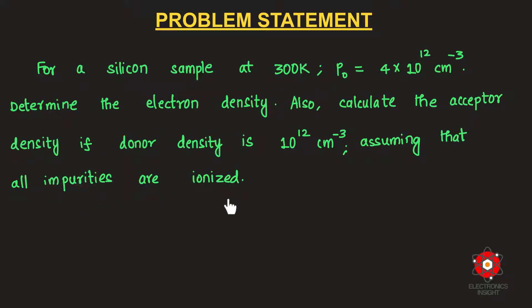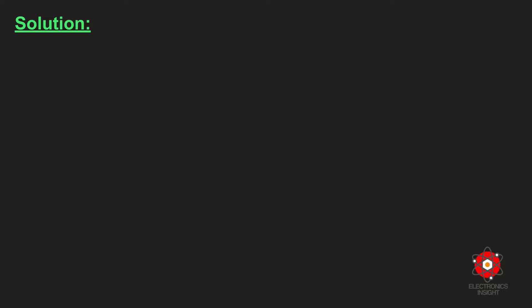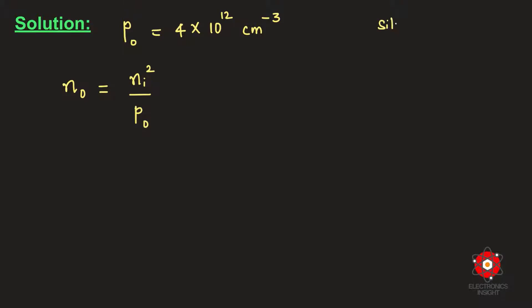Since all impurities are ionized, we use the charge neutrality concept. To estimate electron density, we use the mass action law: n₀ = ni² / p₀. The equilibrium hole concentration p₀ is 4×10¹² per cm³.